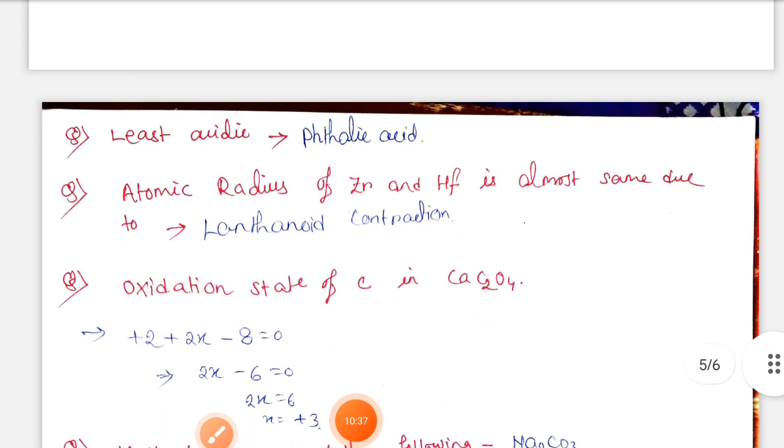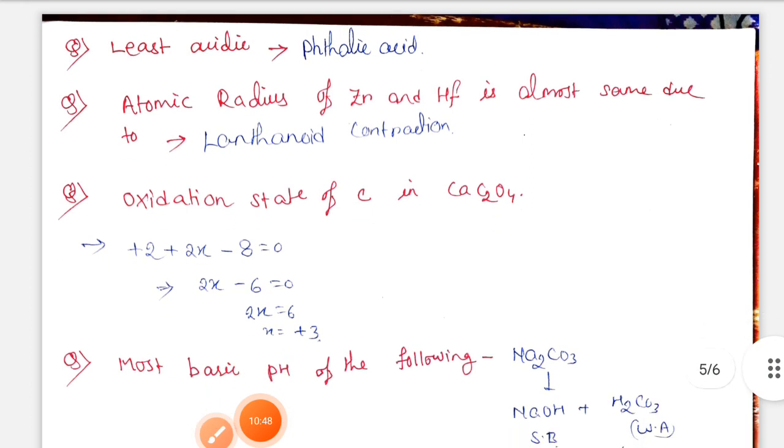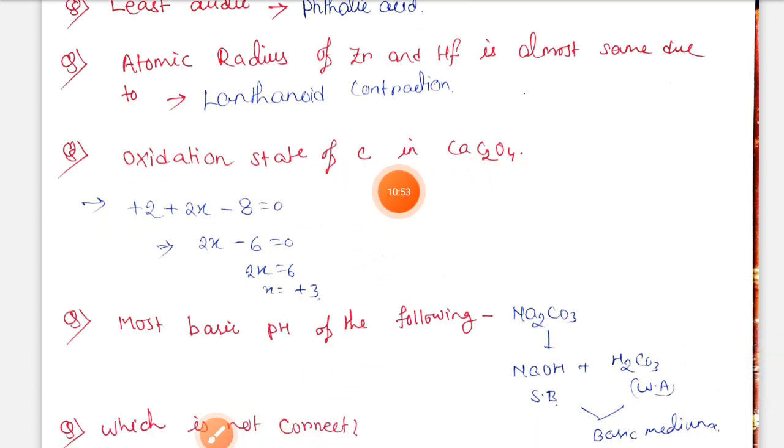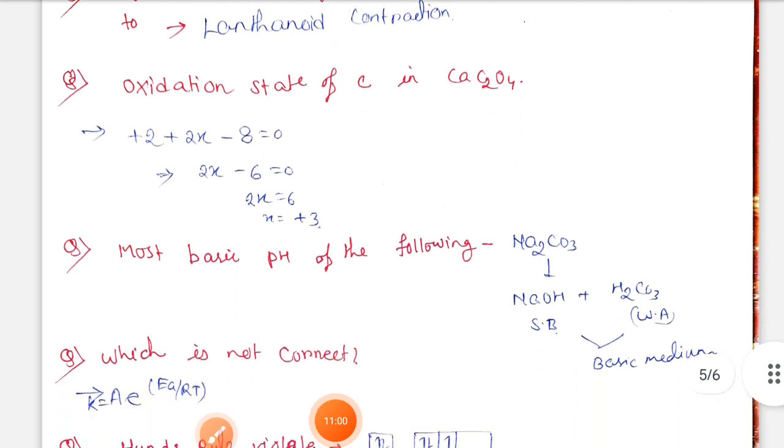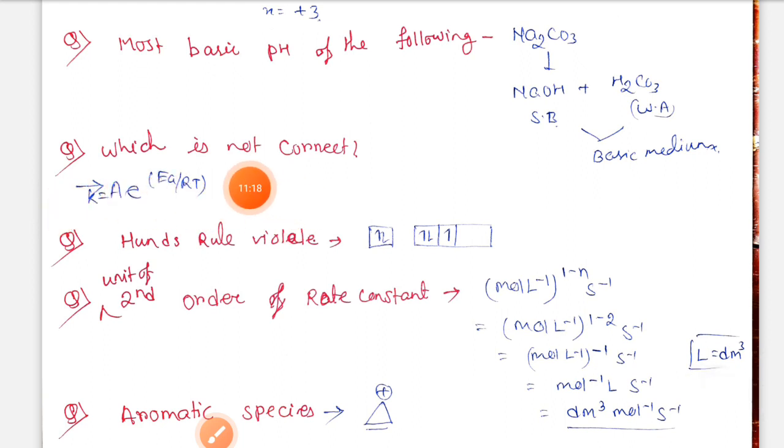Atomic radius of zirconium and hafnium is almost same due to lanthanoid contraction. Oxidation state of carbon in CaC2O4: calcium is +2, 2x - 8 = 0, so x equals +3. Most basic pH - this solution is most basic because it's formed by NaOH and H2CO3. H2CO3 is weak acid, NaOH is strong base, so the medium is basic. Which is not correct? K = A × e^(Ea/RT). We know K = A × e^(-Ea/RT), so this is incorrect.